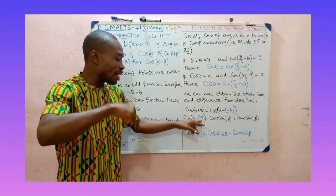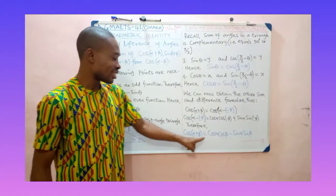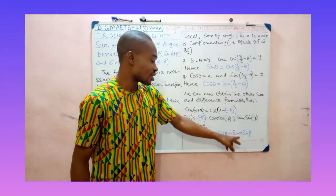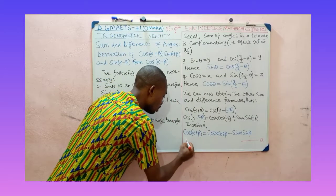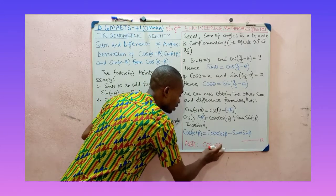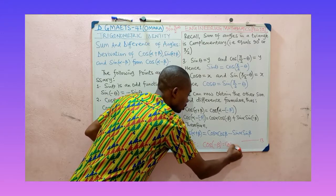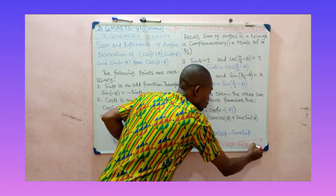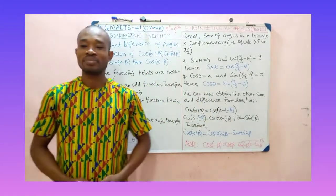Therefore, cos(α−(−β)), which is the same as cos(α+β), is equal to cos α · cos β − sin α · sin β. To summarize: cos(−β) = cos β and sin(−β) = −sin β — that is what we applied here.